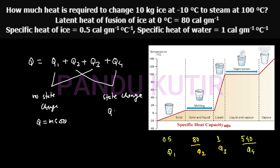Q is equal to mL, where M is mass and L is latent heat. This applies to latent heat of fusion and latent heat of vaporization. For sensible heat, Q equals mc·ΔT.